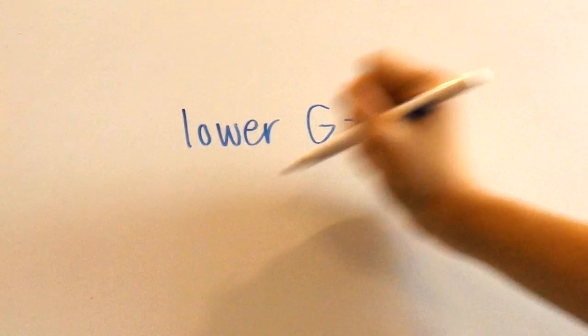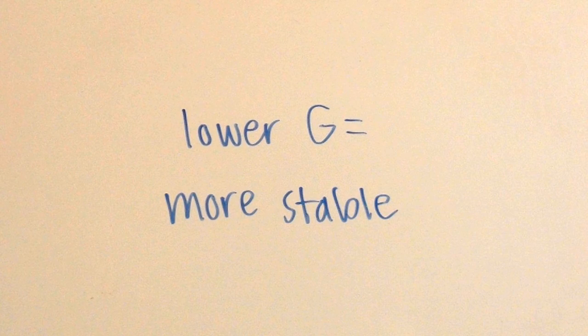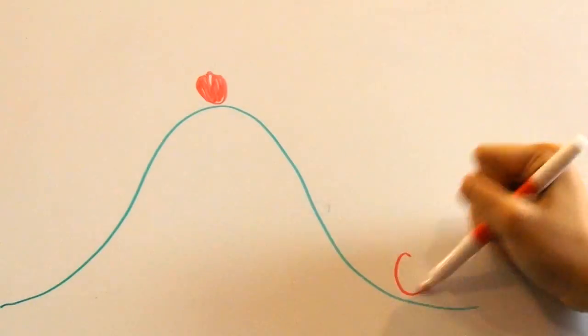Another key thing to remember is that systems with lower G are more stable than systems with higher G. Like a ball on the top of the hill is more likely to roll than a ball at the bottom of the hill.